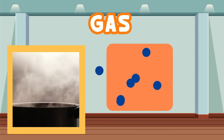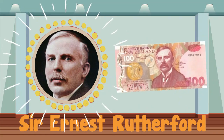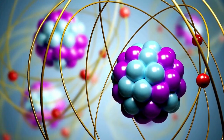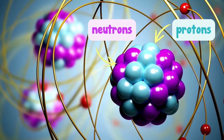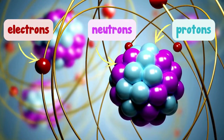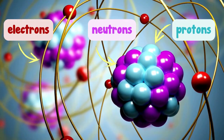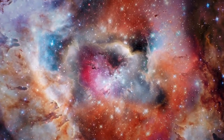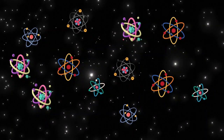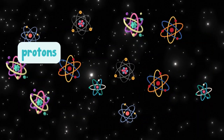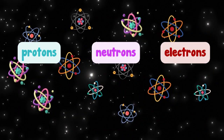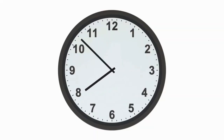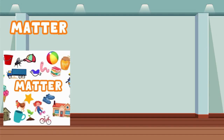Sir Ernest found out that all atoms have three parts: the middle part called the nucleus, which is made up of protons and neutrons, and around the outside, a cloud of electrons. This is important information because the universe is full of all sorts of different atoms, each with a different number of protons, neutrons, and electrons.